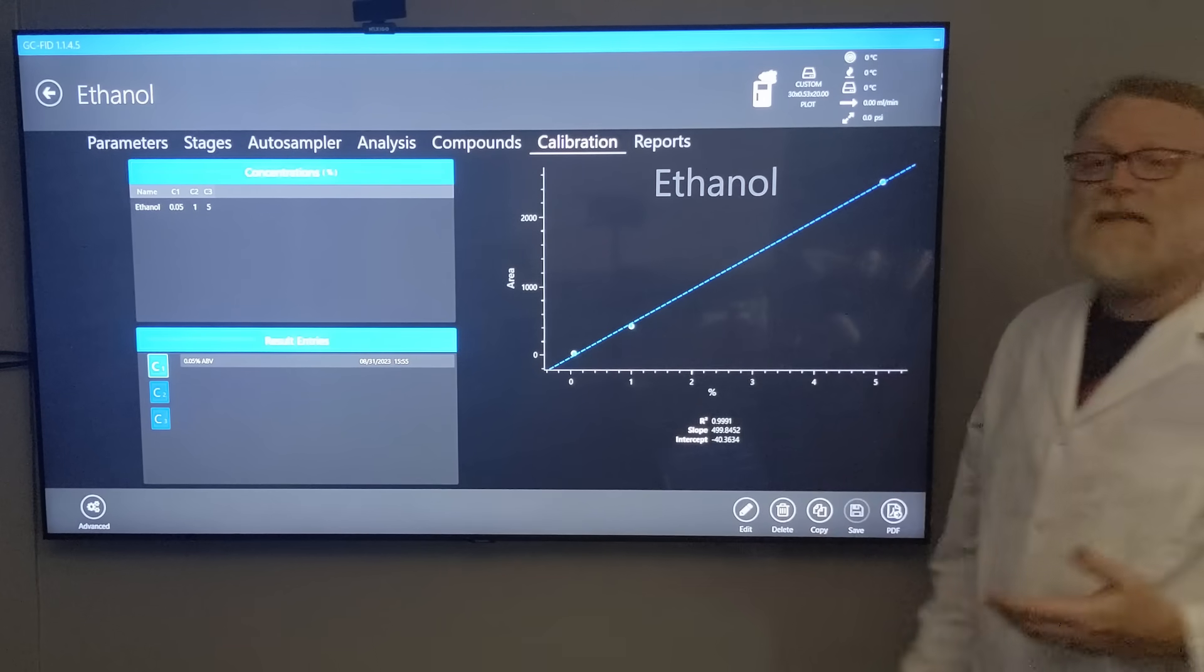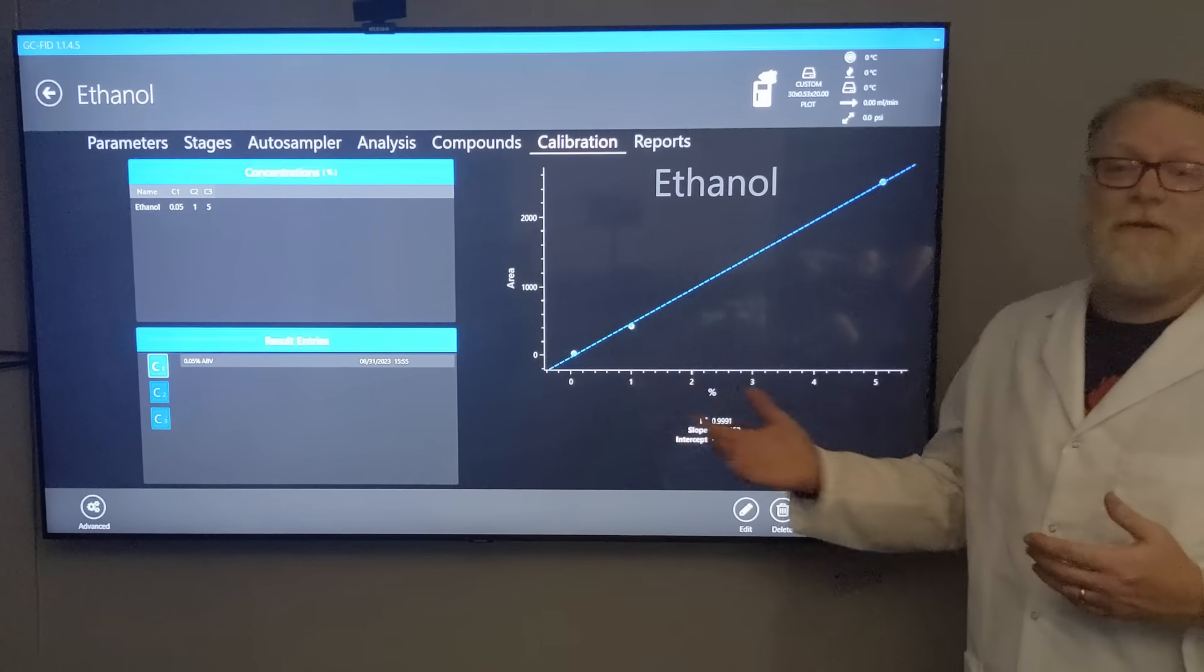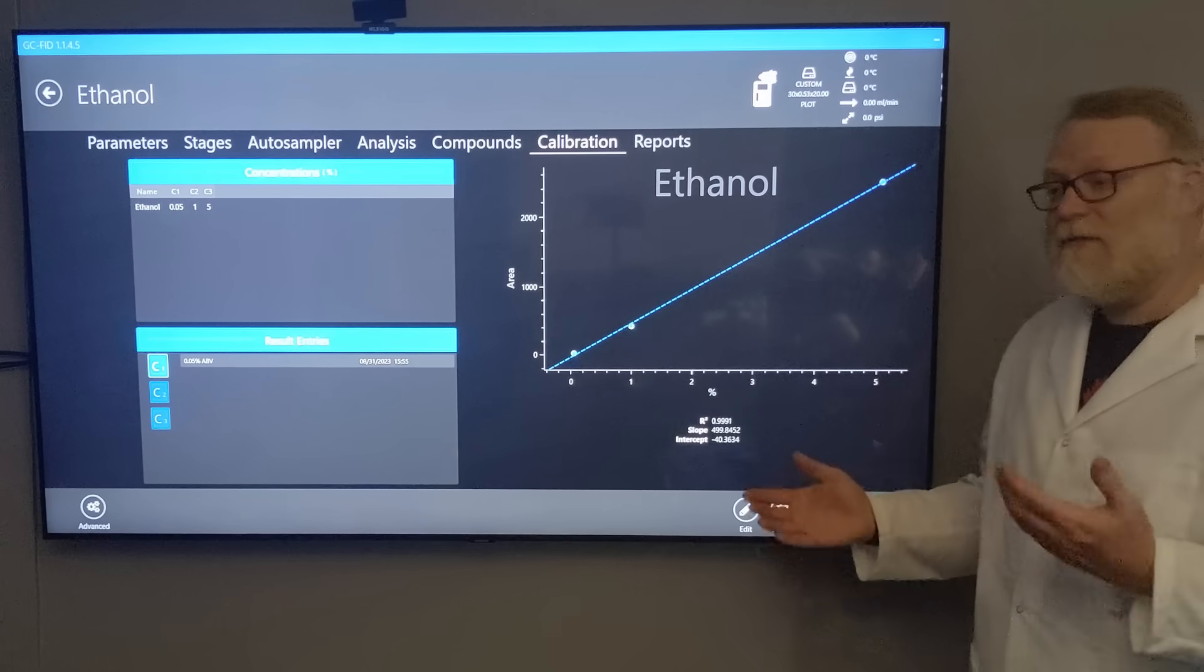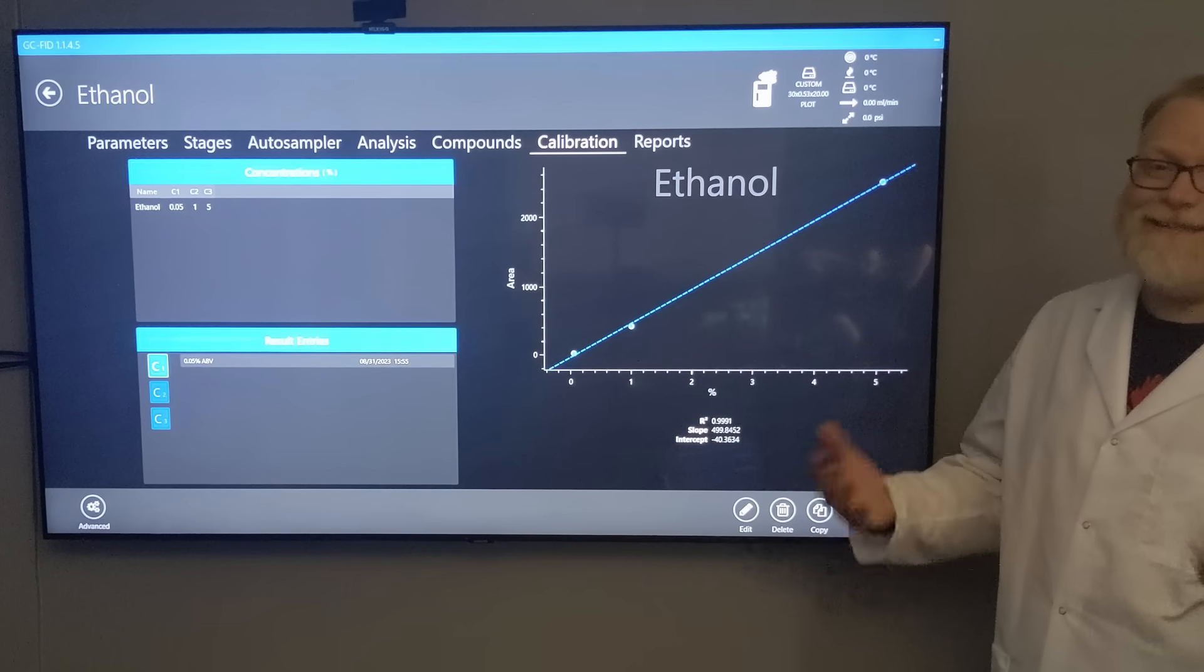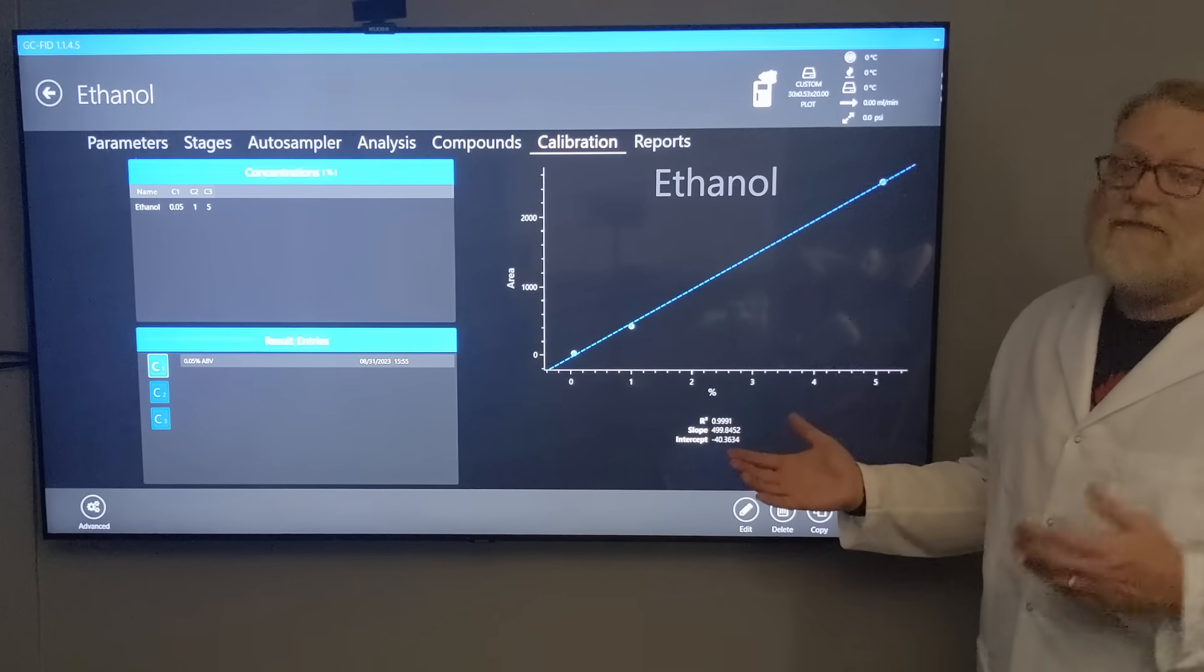It's very difficult to do visually on a graph, but using y = mx + b, we can get an exact point. The great thing is we don't have to do the math - the Lucidity software does it for us.